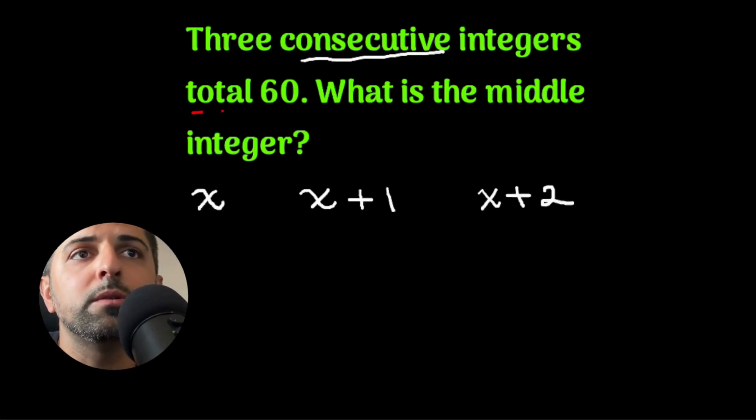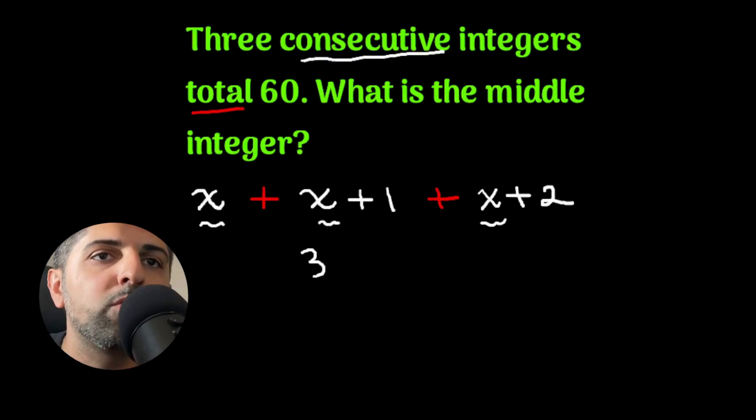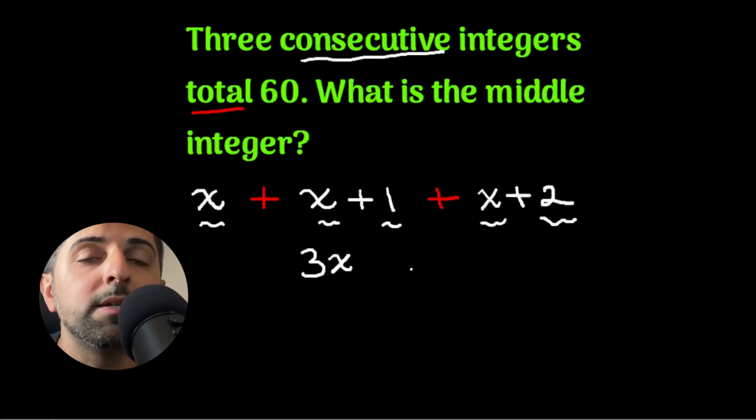To get a total, what I do is I add these three white numbers. When I do that, I can collect like terms. So I have x plus x plus x. What do I get? 3x. I have 1 plus 2. What do I get? 3.